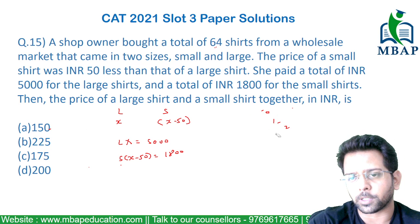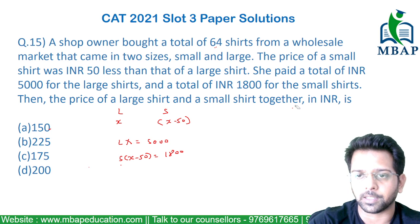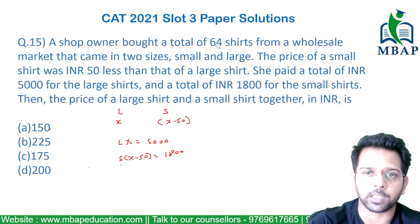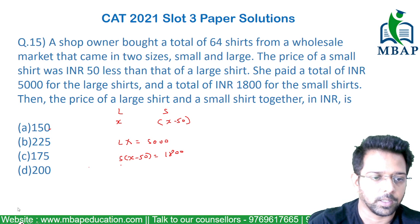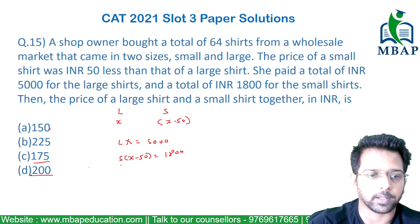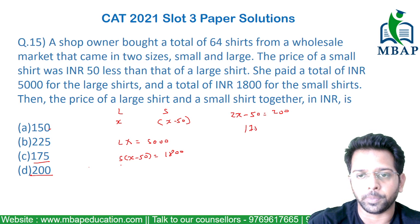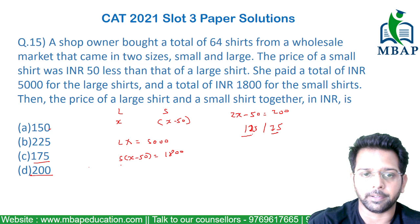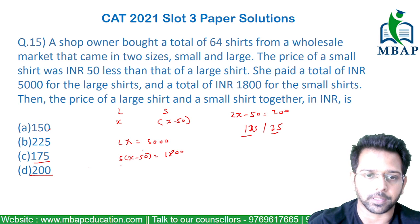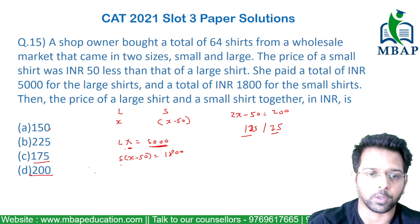There are only four options, so you can mark option number 4 as the final answer. But if you want to test this out, let's verify with 200. The price is 2X minus 50 equals 200, which gives the large shirt price as 125 and the small shirt price as 75 rupees. L into 125 equals 5000, so L comes out to be 40.